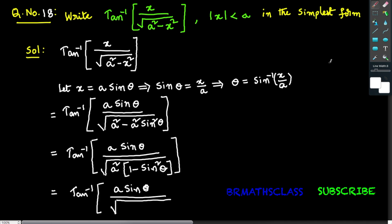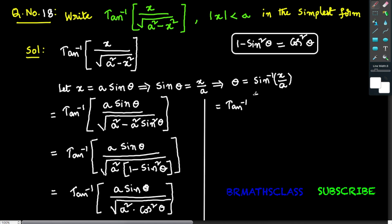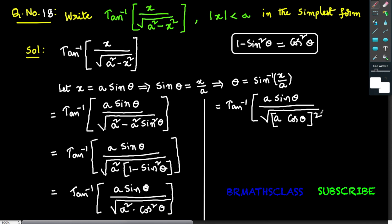From trigonometry, we know the formula: 1 minus sine square theta equals cos square theta. So the denominator becomes square root of a square into cos square theta. Now, a square cos square theta can be written as a cos theta whole square. The square root and the square both cancel, leaving a cos theta in the denominator.